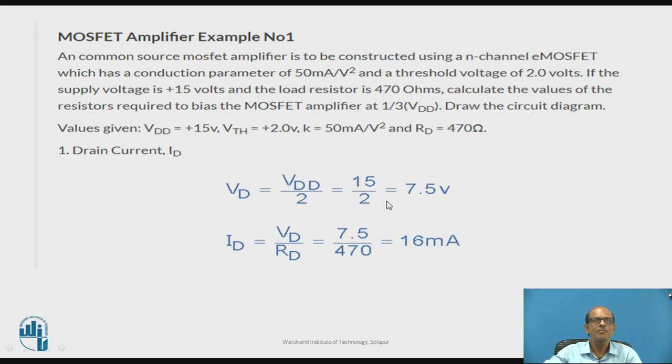MOSFET amplifier design example. A common source MOSFET amplifier is to be constructed using N-Channel E MOSFET which has a conduction parameter of 50 mA per volt square and threshold voltage of 2 volt. If the supply voltage is 15 volt and the load resistance is 470 ohm, calculate the values of resistors required to bias the MOSFET amplifier at one-third VDD. Values given are: VDD equal to plus 15 volt, VTH 2 volt and K equal to 50 mA per volt square and RD given is 470 ohm.